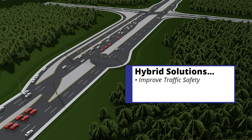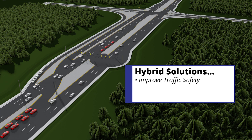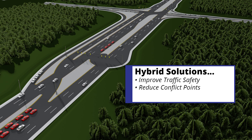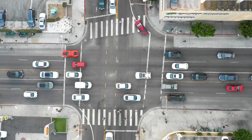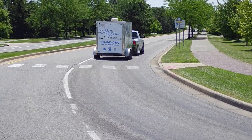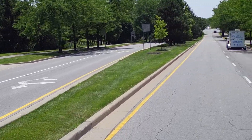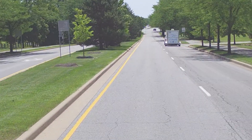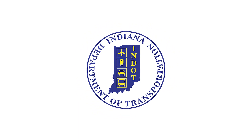Hybrid solutions use a combination of alternative traffic movement types to improve safety for all drivers by placing turning movements away from the main intersection. This reduces the number of conflict points and high-risk turns. If you find yourself turning left or right in a different way, know that this is a conscious effort to ensure your safety and the safety of others on our roadways.